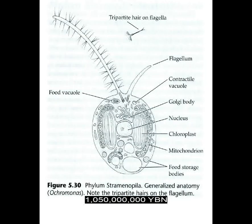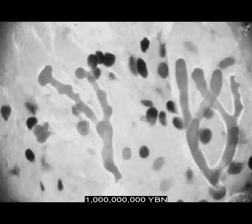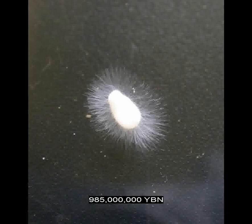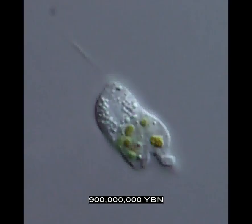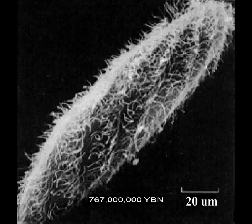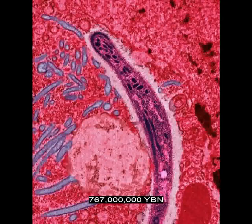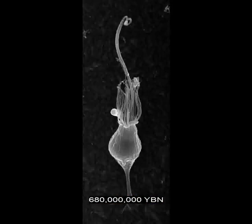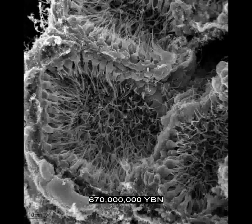The protists stramenopiles, also called heteroconts, evolve — ancestor of all brown algae, golden algae, diatoms, and oomycota. The protists mesomycetazoa evolve. The protist phylum oomycota evolves — ancestor of the oomycetes, water molds. The protists rhizaria evolve — ancestor of all radiolaria, foraminifera, and cercozoa. The fungi zygomycota evolves — ancestor of bread molds and pin molds. The protist phylum ciliophora evolves — the ciliates, ancestor of the paramecium. The protist phylum apicomplexa evolves — includes malaria and toxoplasmosis. The protists choanoflagellates evolve — the closest relatives to the animals, possibly direct ancestors of sponges. Multicellularity evolves in a free-moving protist, allowing larger free-moving organisms to evolve.